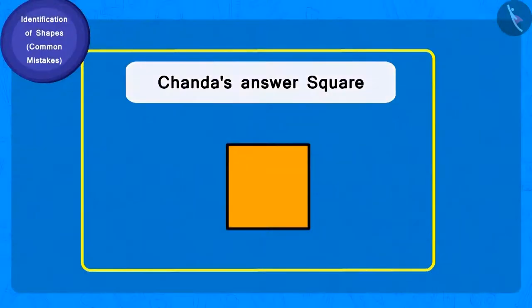Chanda has written square as her answer. How many sides does a square have? Four. And how many corners? Four.